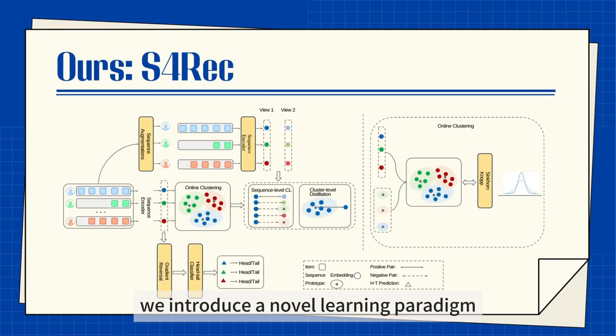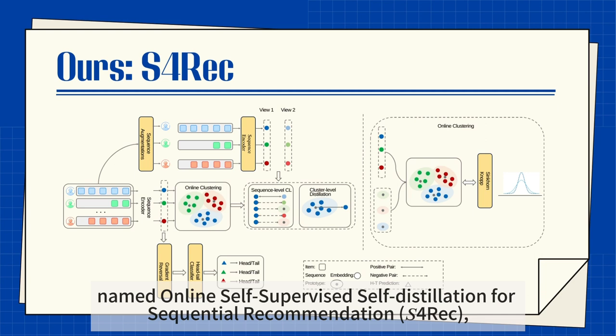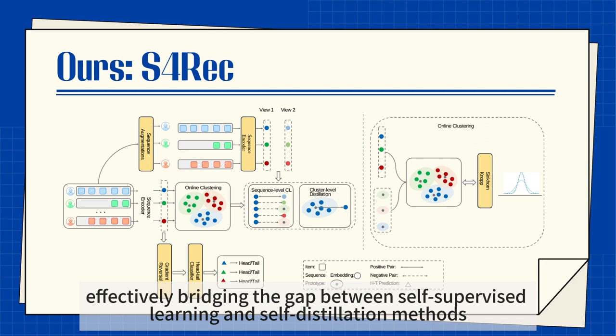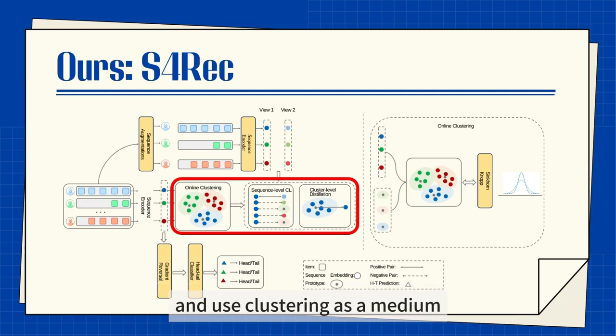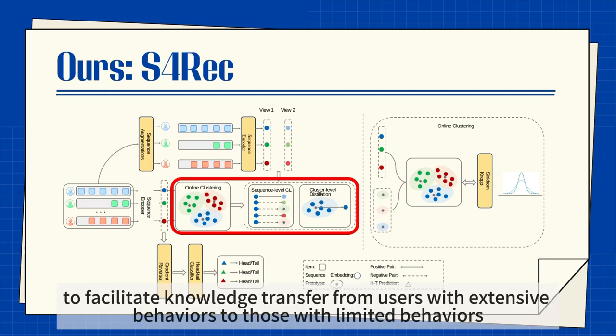To address this problem, we introduce a novel learning paradigm named Online Self-Supervised Self-Distillation for Sequential Recommendation, S4REC, effectively bridging the gap between self-supervised learning and self-distillation methods. The fundamental idea is to cluster users based on their sequential behavioral intents and use clustering as a medium to facilitate knowledge transfer from users with extensive behaviors to those with limited behaviors.